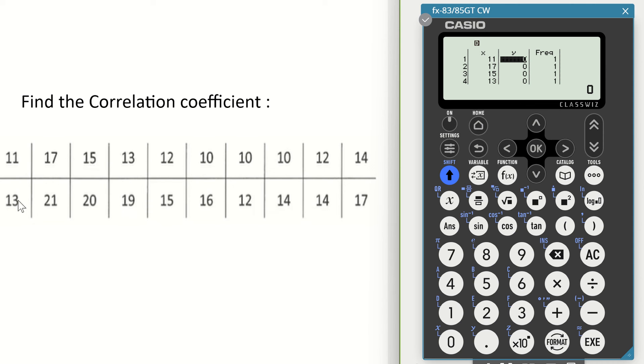From here I now put in my Y input, starting with 13 on my calculator followed by equals after each one. So 21 equals, 20 equals, and so on. Continue with each value, pressing equals after each entry: 12 equals, 14 equals, 14 equals, 17 equals.